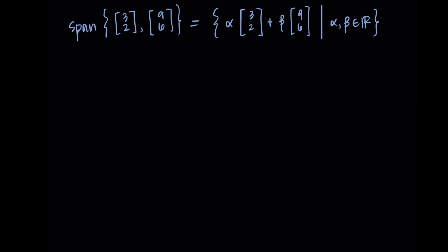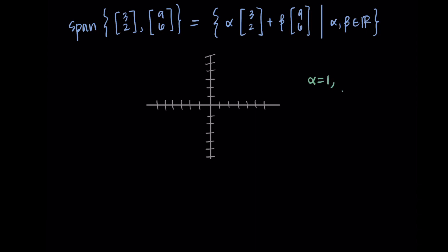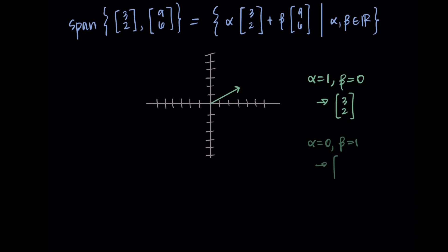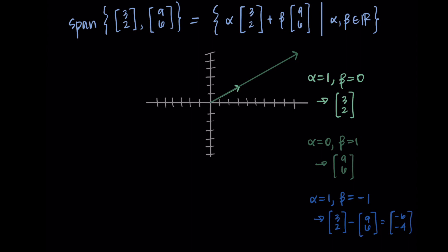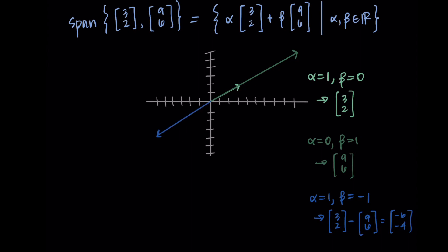Looking at a couple of combinations: alpha=1, beta=0 gives us [3,2]; alpha=0, beta=1 gives us [9,6], but as I graph this I notice it seems to be on the same line as the [3,2] vector. Trying alpha=1 and beta=-1 gives [3,2] minus [9,6] which is [-6,-4] — again on the same line, just pointing in the other direction. Everything lies on the same line.